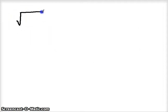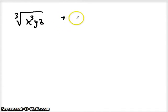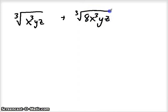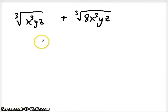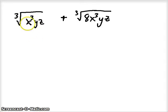Let's do another example, getting crazier still. Say we have the cube root of x cubed yz added to the cube root of 8x cubed yz. So far I have the same index, but I don't have the same radicand, so we simplify first. Taking cube roots — I can recognize that x cubed is a perfect cube, so I take one x out and I'm left with yz inside the radical.